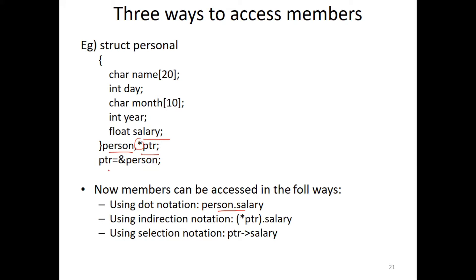Here, as you can see, PTR is the person that holds the address of the structure. In PTR, you can see the person that has the address. So we are using this particular operator, that is the arrow (->), that is the selection notation operator. So PTR -> salary indicates the pointer variable accessing the member.